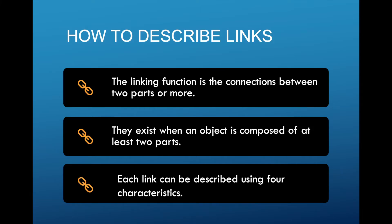So how do we describe links? The linking function is the connection between two parts or more. They exist in an object that is composed of at least two parts. Since they're connecting two parts, obviously you have to have two parts to your system. And each link can be described using four characteristics.